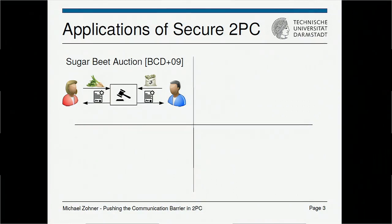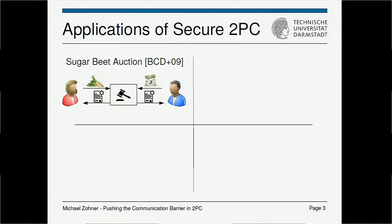One example is sugar beet options used in Denmark. On one hand we have the sugar beet farmers, on the other hand we have big companies who want to buy sugar beets. They engage in a secure two-party computation protocol in order to establish a contract that determines how many sugar beets are sold and at what price.